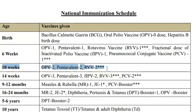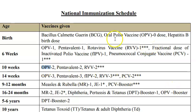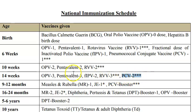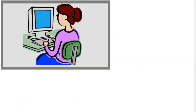At 10 weeks, OPV2, pentavalent 2, and rotavirus vaccine 2 are given — note that OPV2 is actually the third dose of oral polio, since OPV zero was given at birth. At 14 weeks, the same schedule as six weeks applies: OPV3, pentavalent 3, rotavirus 3, fractional dose IPV, and PCV2 — again, rota and PCV only in selected states.